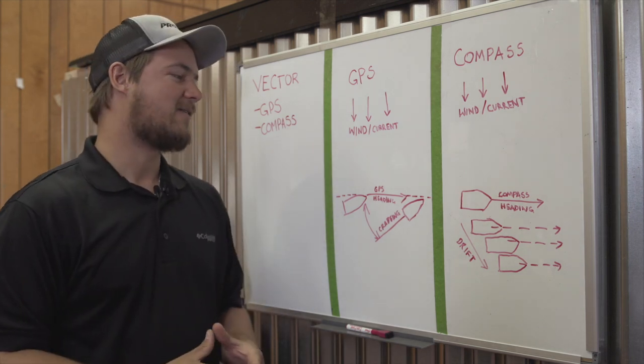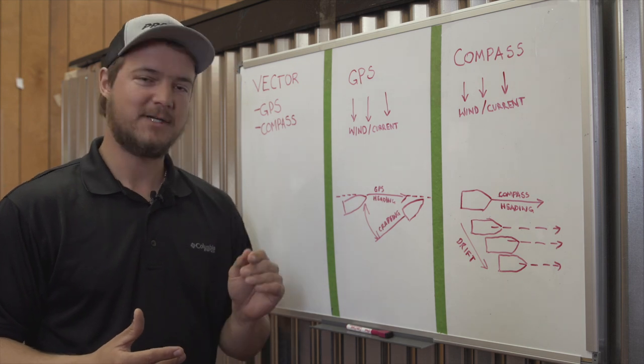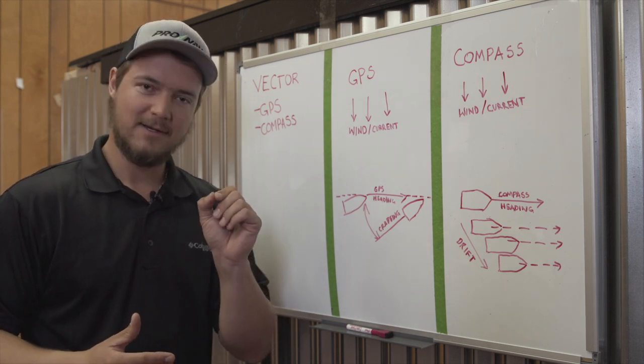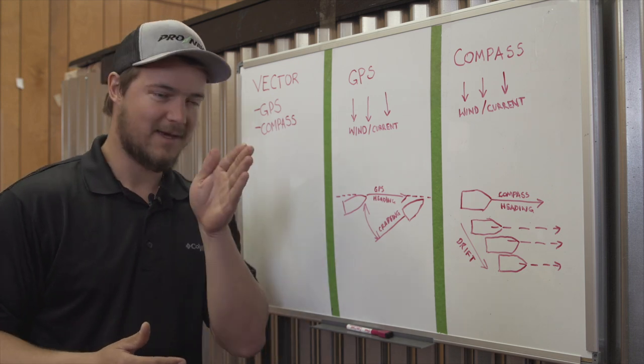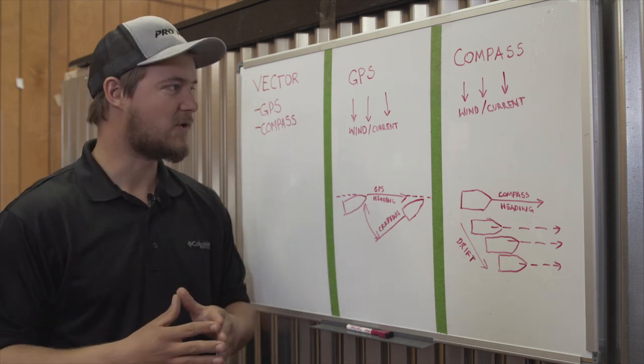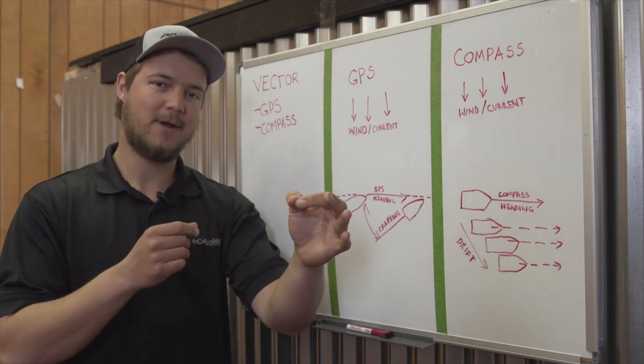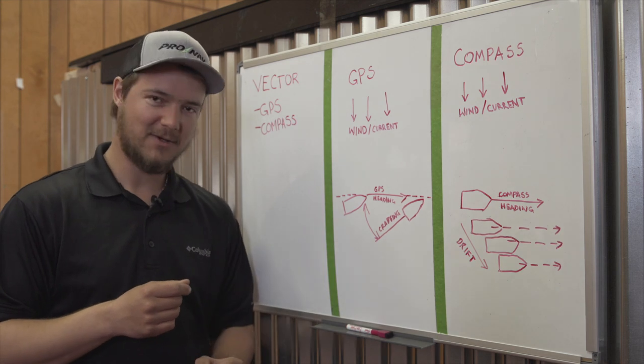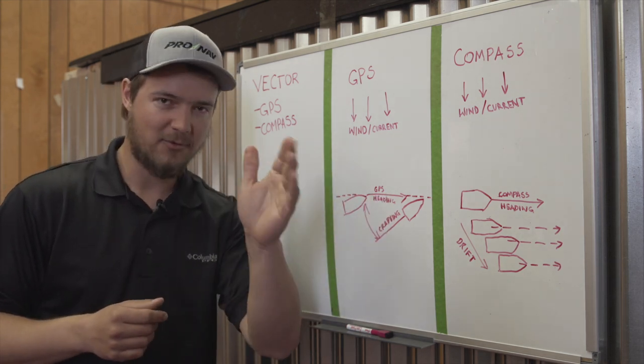A GPS heading lock is a mode that I'm going to use a lot of times when I'm out fishing and I want to get directly from point A to point B in a straight line. Think of a GPS heading lock as creating a two-point route from your current location to a far-off point where you want to end up.